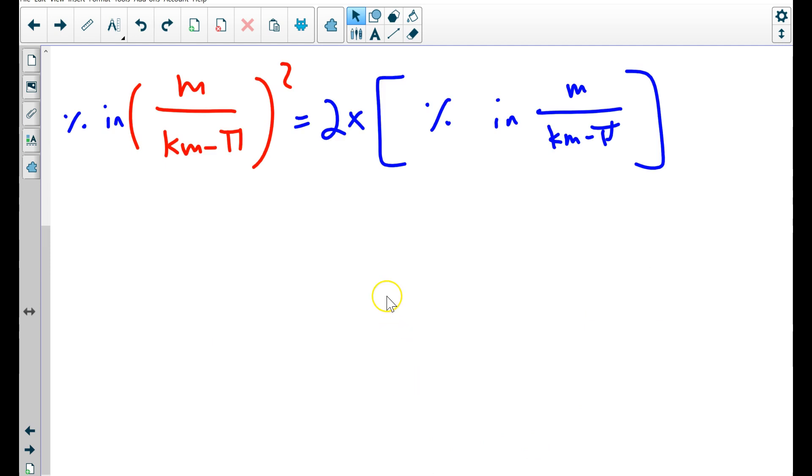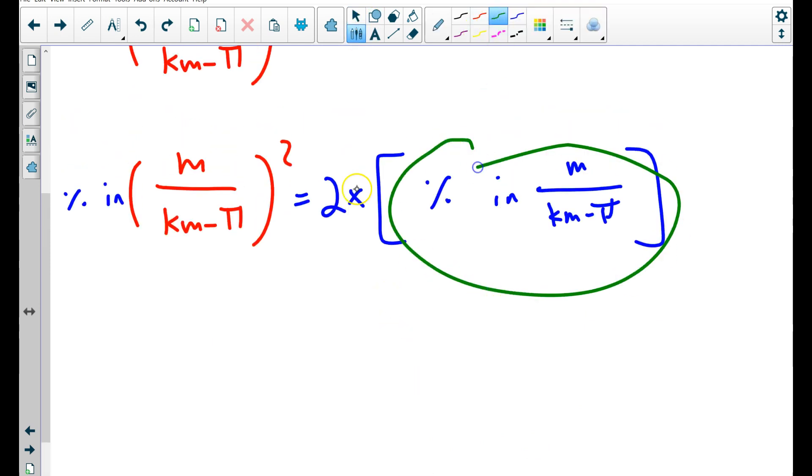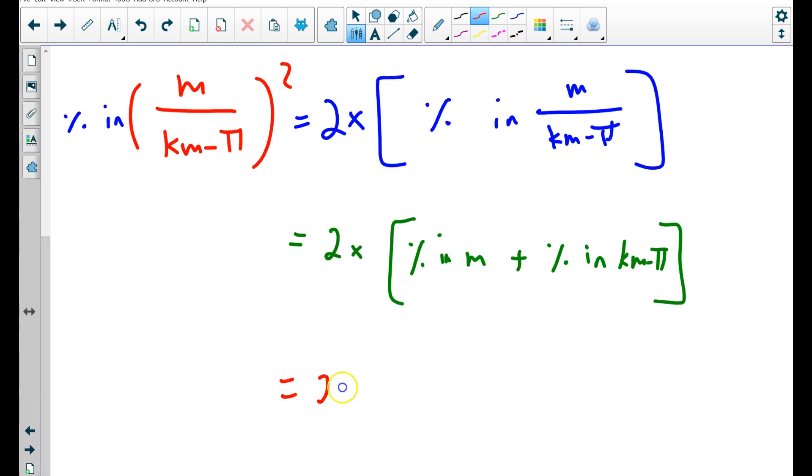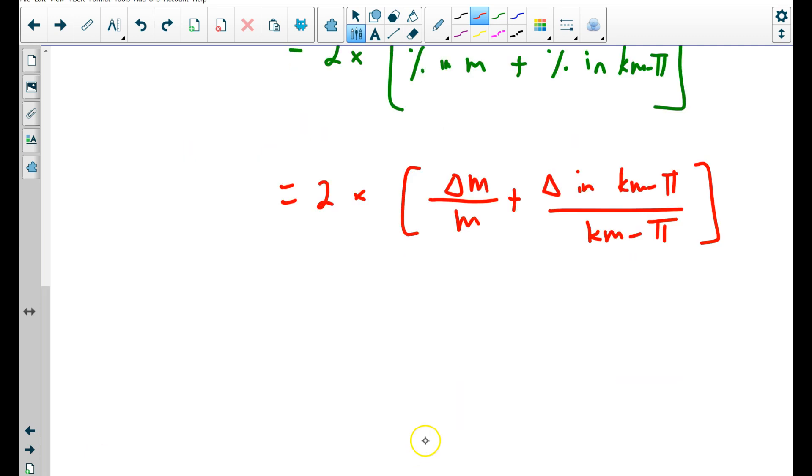So we would keep going, we would say, okay, well, so what's the, how can we simplify this and figure out what that equals? Well, you've got a numerator and a denominator, and there's a rule that says whenever you divide, add the percent uncertainties to get the new percentage. So we're looking for the total percentage in the whole fraction, and our propagation rule says, add the uncertainty in the numerator with the uncertainty in the denominator, km minus pi. Okay, this uncertainty is really easy. We know what that is. That is simply going to be the absolute uncertainty in m, the .01 divided by the value of m. This uncertainty is more complicated, because it's the absolute uncertainty in km minus pi over the value of km minus pi, right.